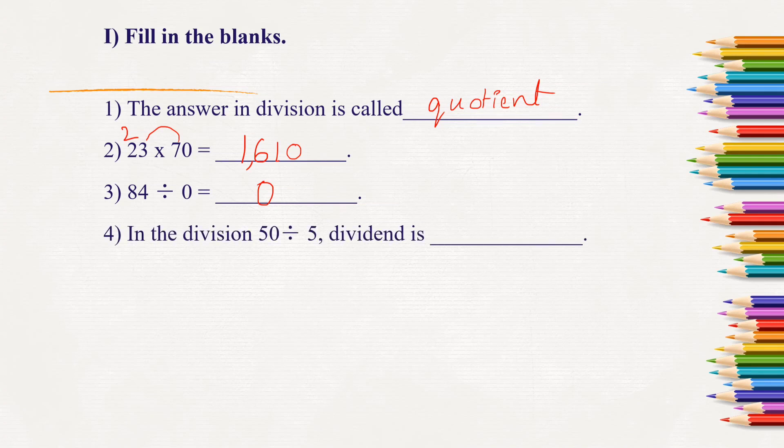Next, in the division 50 divided by 5. Here, what is the dividend? Dividend is the greater number which will be divided by the smaller number, that is divisor. So 5 will be the divisor and 50 is the dividend. So we have to write 50.